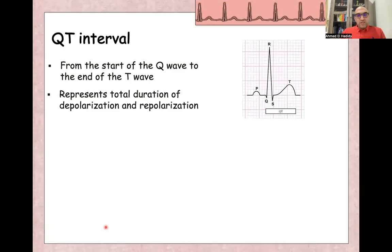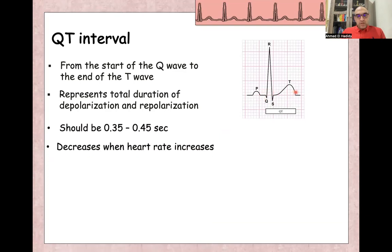QT interval from the beginning of the QRS complex till the end of the T wave. And this represents the total duration for ventricular depolarization and repolarization. Should be from 0.35 to 0.45 seconds and usually decrease if heart rate increases.